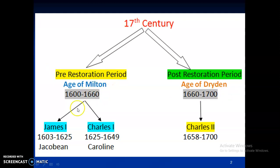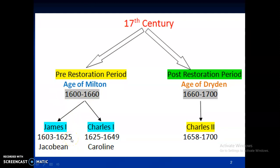Now the pre-restoration period is further divided into two eras — these are political eras. James I was ruling England from 1603 to 1625, so with reference to James I, this period of around 23-24 years is known as the Jacobean period. Charles I ruled England from 1625 to 1649, and as per his name, this period is known as the Caroline period. So these 60 years have further been divided into two sub time-periods.